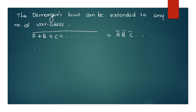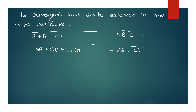Now we will have a combination: A, B plus C, D plus E, F, G. If complemented, this becomes A complement, B complement into C, D complement into E, F, G complement. If you have a complemented expression, you will have a number of variables.